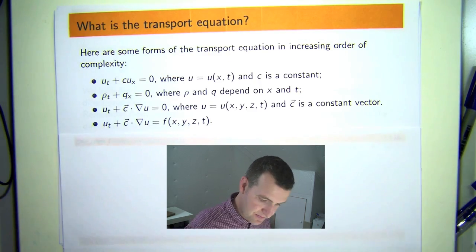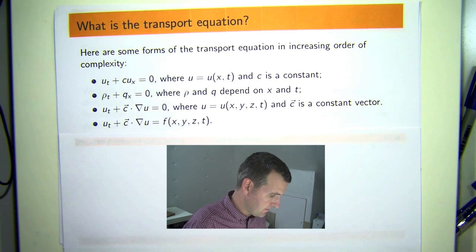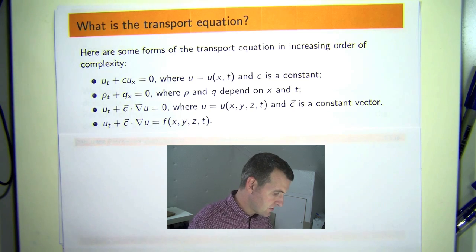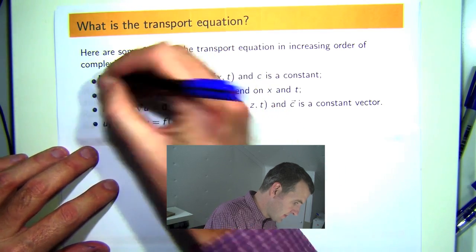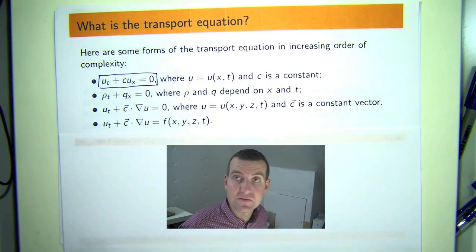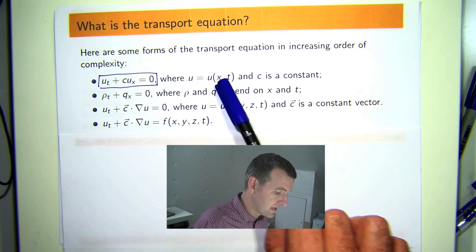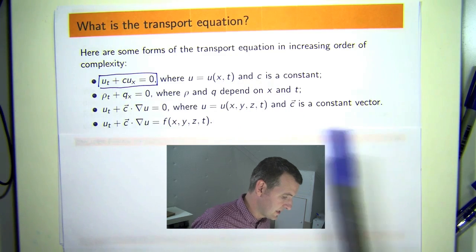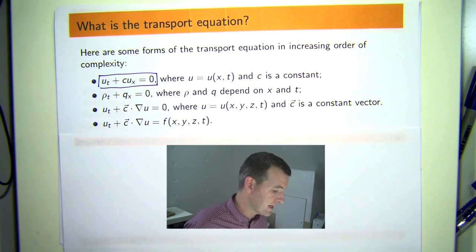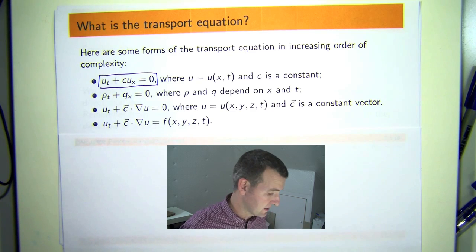So what is the transport equation? Well here are some forms. The most basic form is the following. Here we look for a function of two variables. U is a function of x and t so think of x as position and t as time and c is a constant here. So there's a zero on the right-hand side so this is the basic homogeneous form of the simple transport equation.